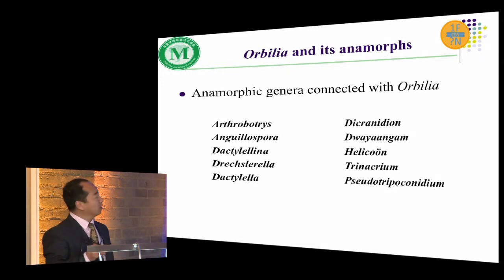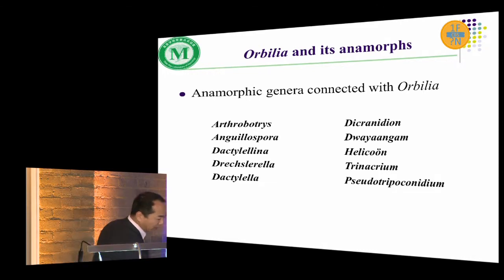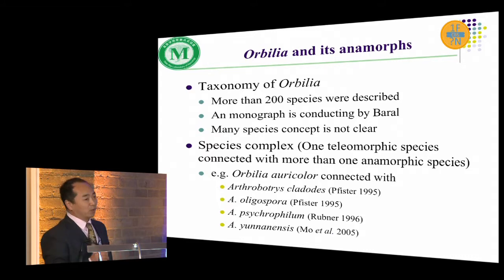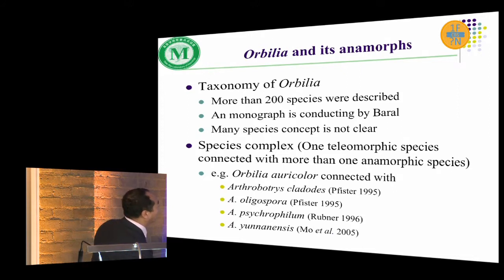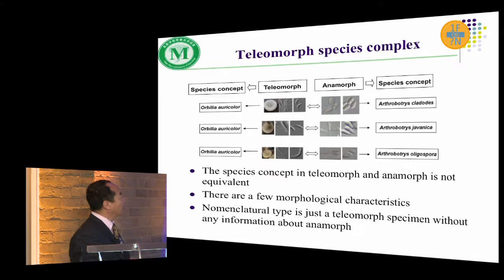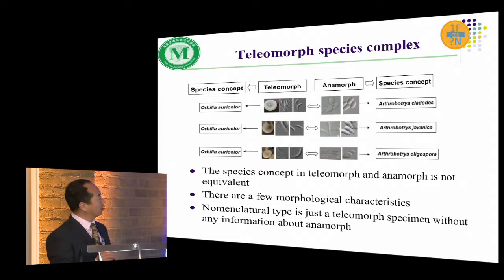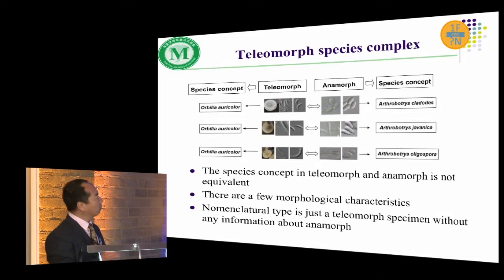After that work, there are 10 anamorphic genera connected with Orbilia. More than 2,000 species have already been described in Orbilia, and a number of telemorph species are connected with more than one anamorphic species — such as Orbilia oricana, which has four anamorphic species. Based on our investigation, the species concept in telemorphic and anamorphic forms is not treated equally, and there are few morphological characters available for Orbilia.